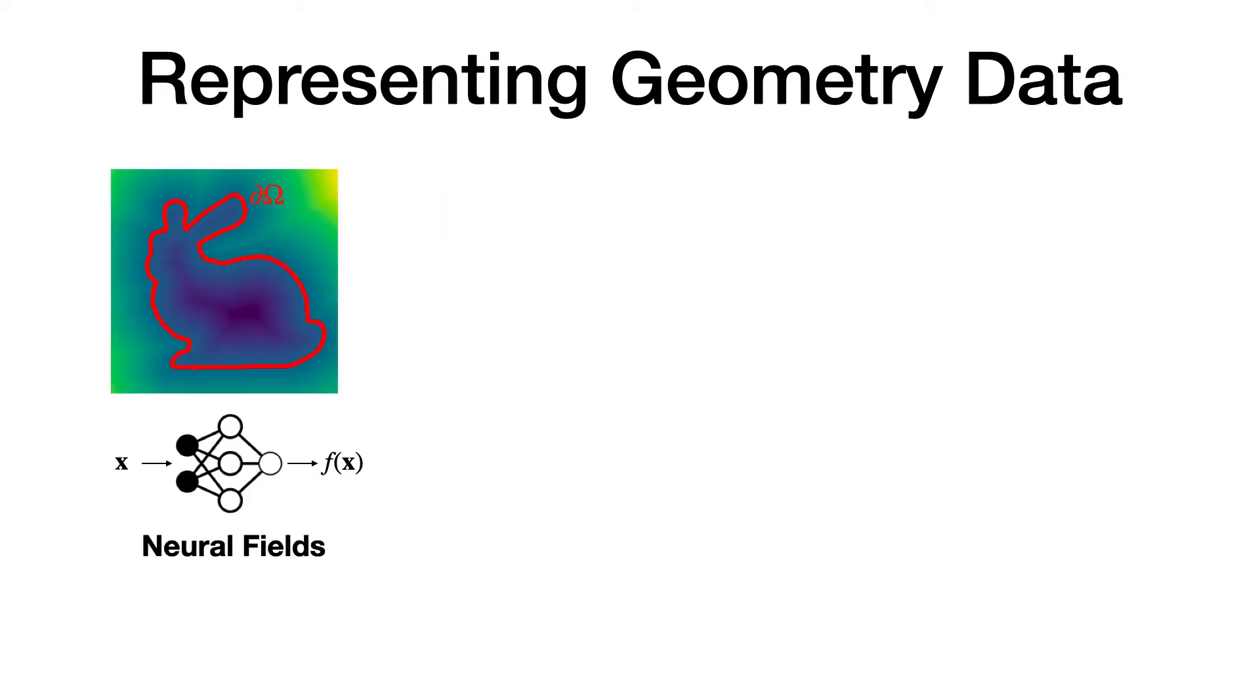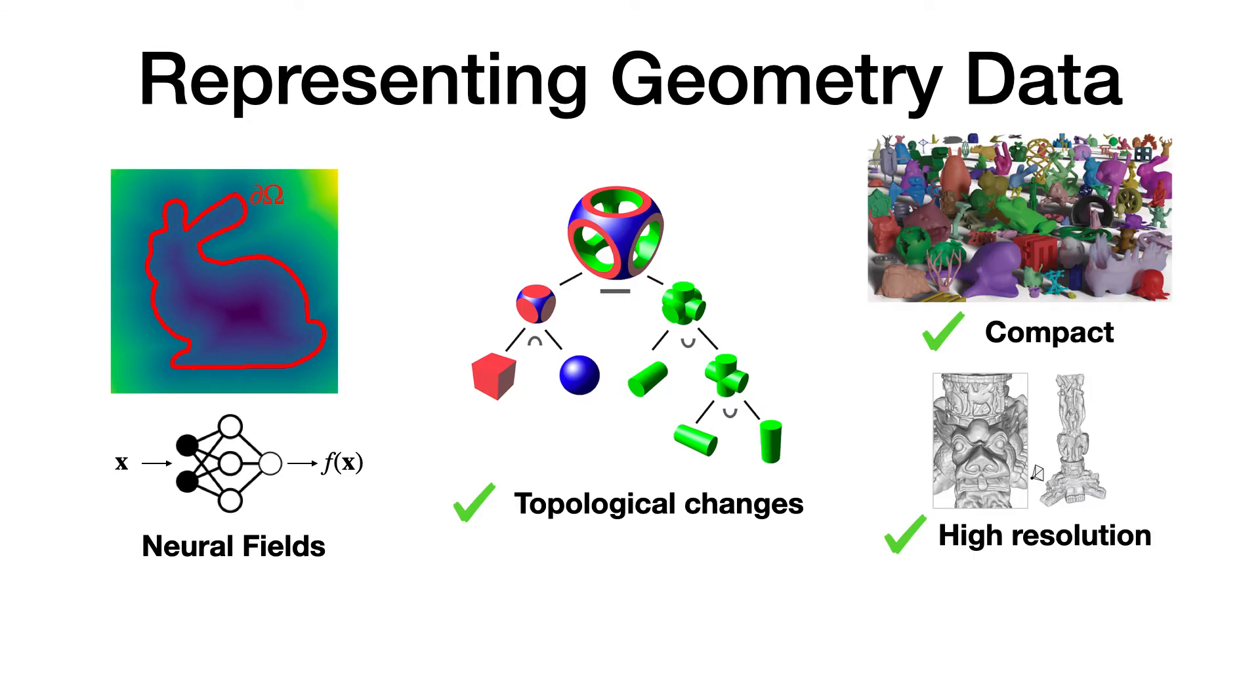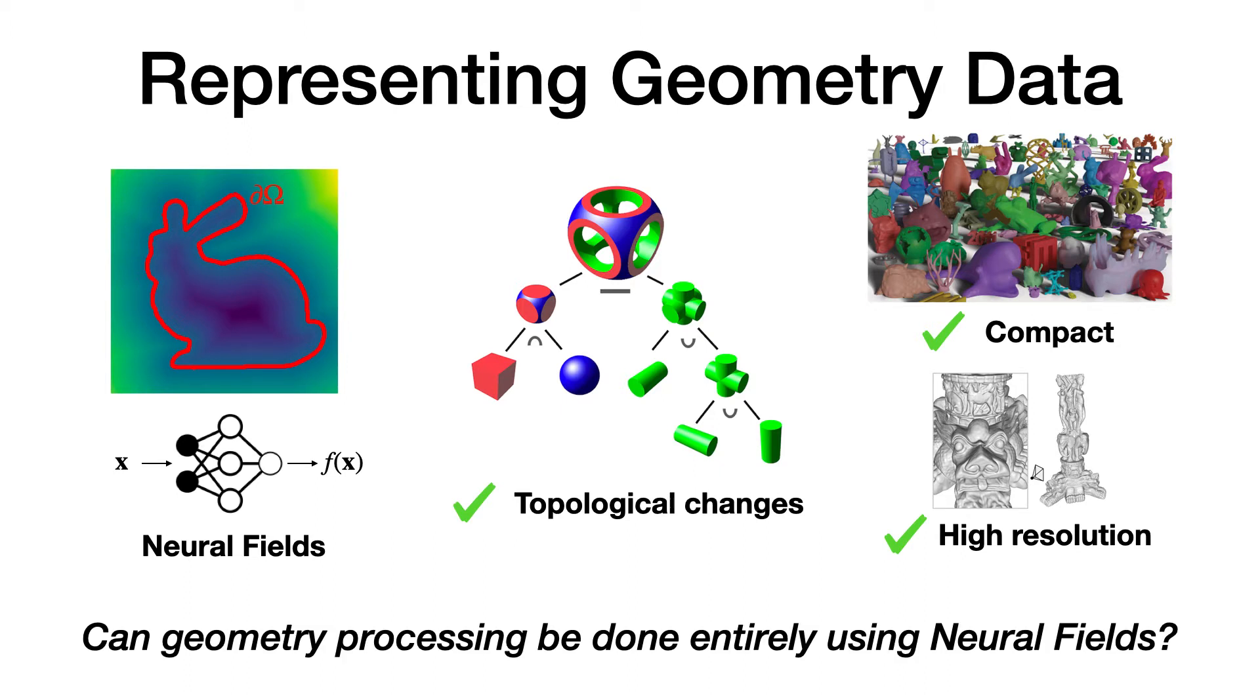Neural fields have many advantages. They inherit the strength of implicit fields, being flexible for topological changes. They also resolve some issues storing implicit fields in voxels, as research shows that neural fields are very compact and they allow sampling in arbitrary resolution. Motivated by these advantages, we ask: are we able to do geometric processing entirely using neural fields?